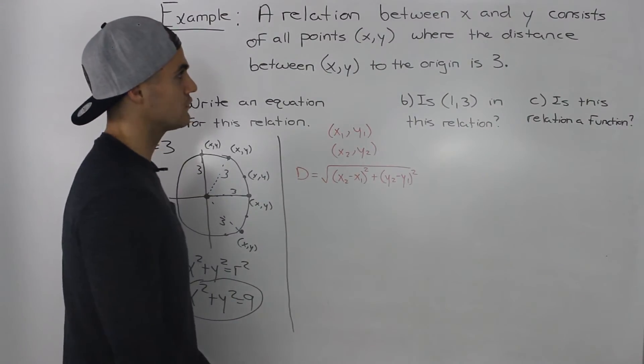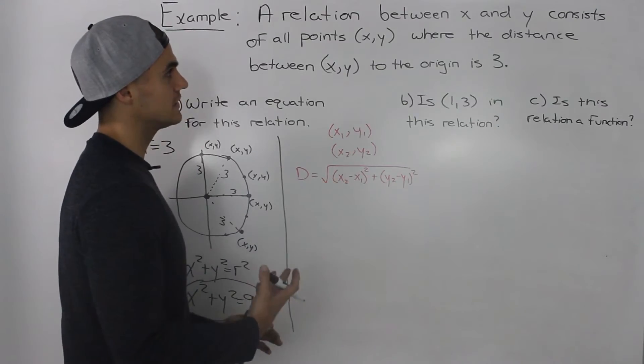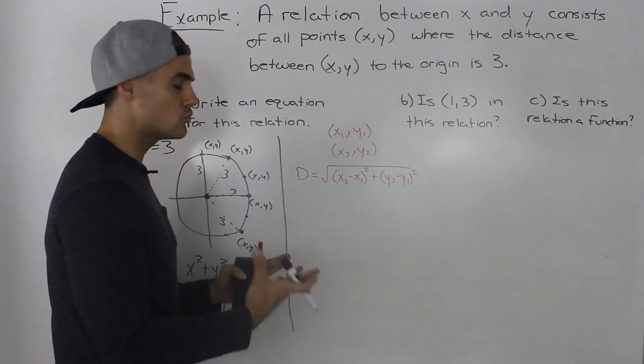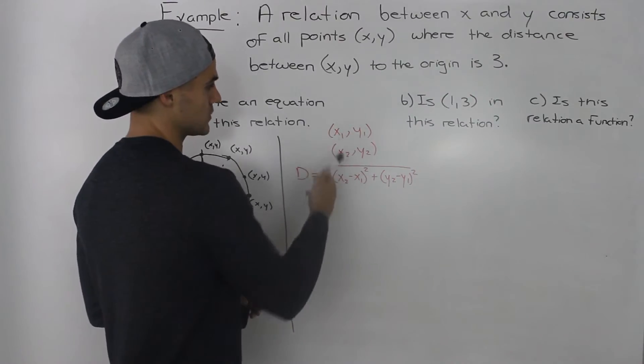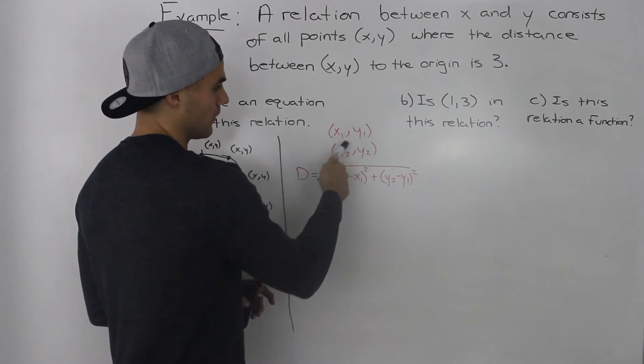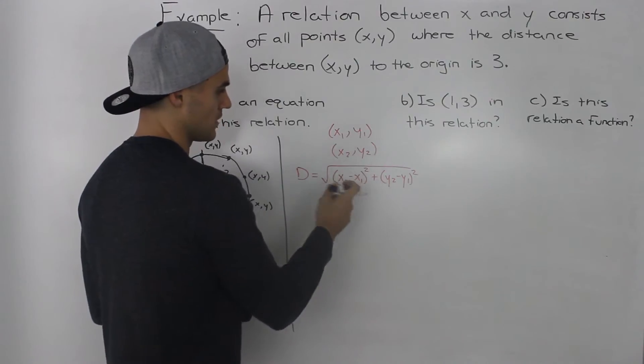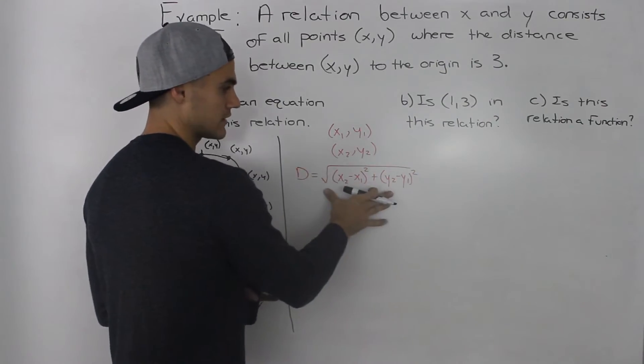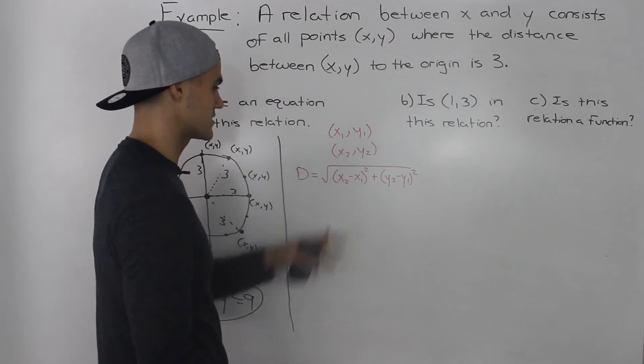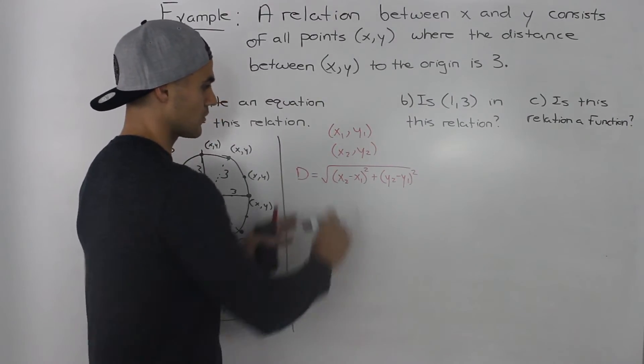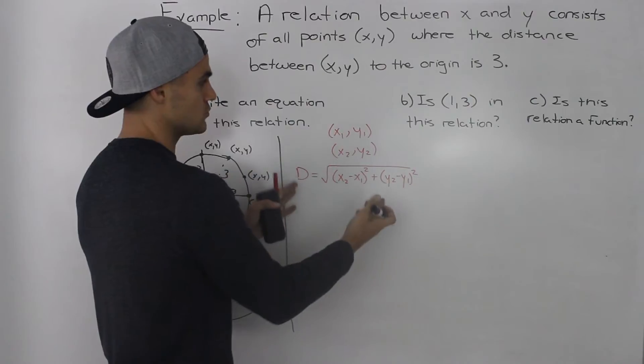Now if you read the question carefully, you can tell that we're dealing with the distance between two points. And just as a review, the distance between two points, so if we have (x₁, y₁) and (x₂, y₂), would be this formula here. You may have to go back all the way to grade 10 to review this. So this is the distance formula between two points.